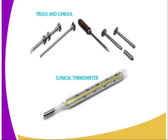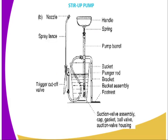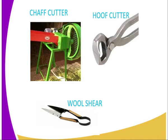Especially in the rumen of ruminant animals. Then we have the clinical thermometer, which is used when checking the temperature of the animal. It is supposed to be inserted into the rectum whenever you want to detect the temperature of a particular animal. Then we have the stirrup pump, which is used in hand spraying whenever you are controlling external ectoparasites during livestock production. We also have the chaff cutter, which is used for chopping fodder crops into small bits, facilitating digestibility when it comes to animal feeding.